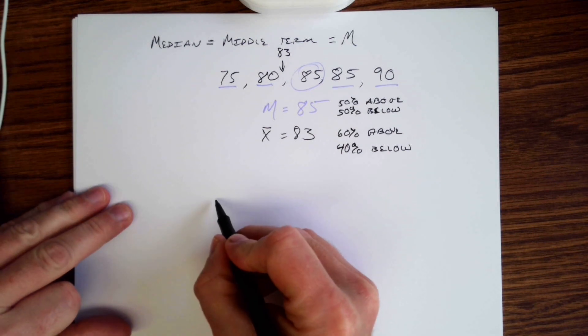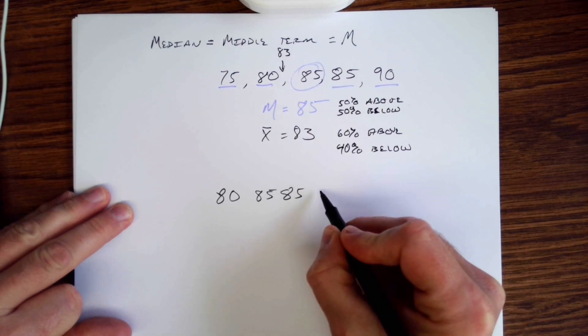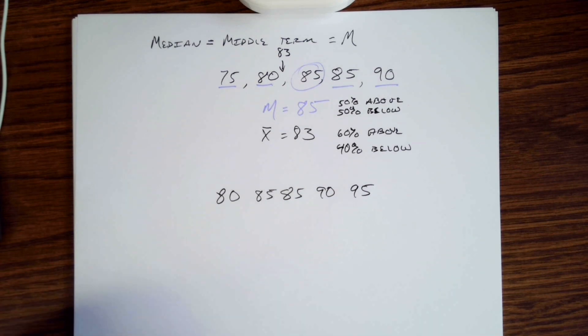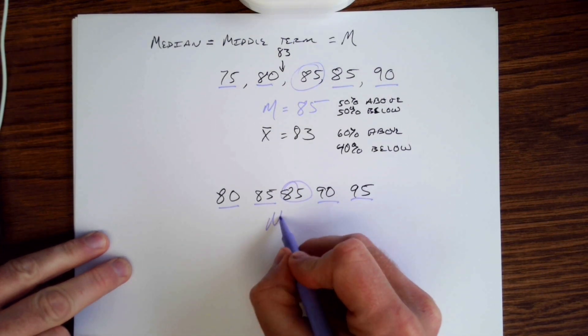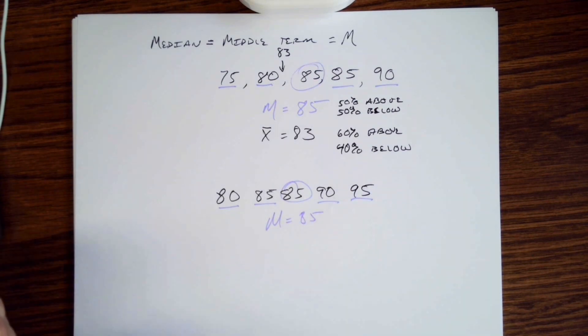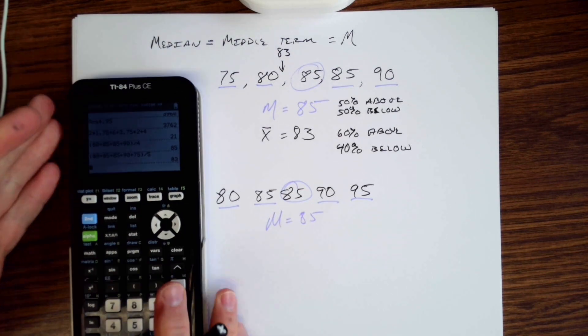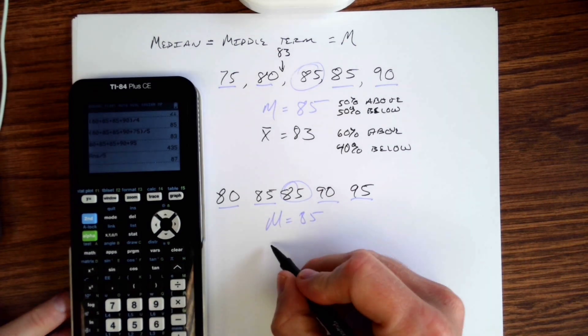So we're talking about 80, 85, 90, 95. Where's the median? Once again you get bottom, top, bottom, top—median, median still 85. What about the average? Well the average, let's do that real quick. 80 plus 85 plus 85 plus 90 plus 95, and then divide that by 5. That gives us an X bar value of 87.